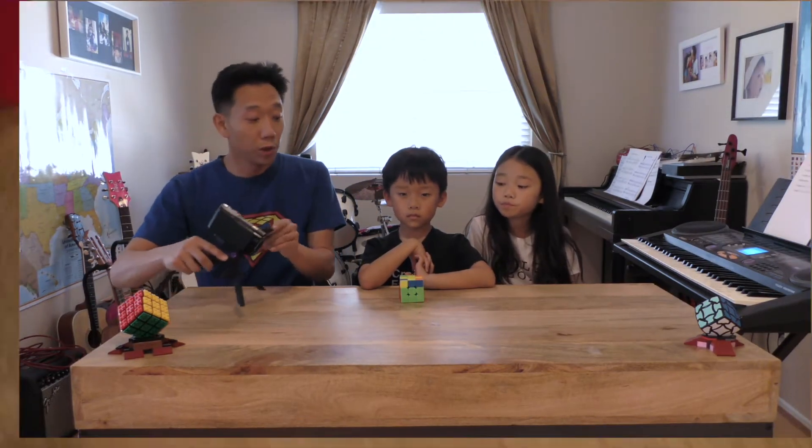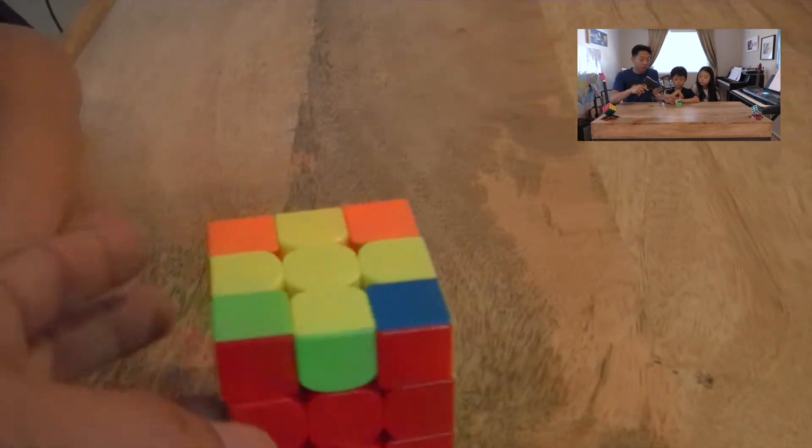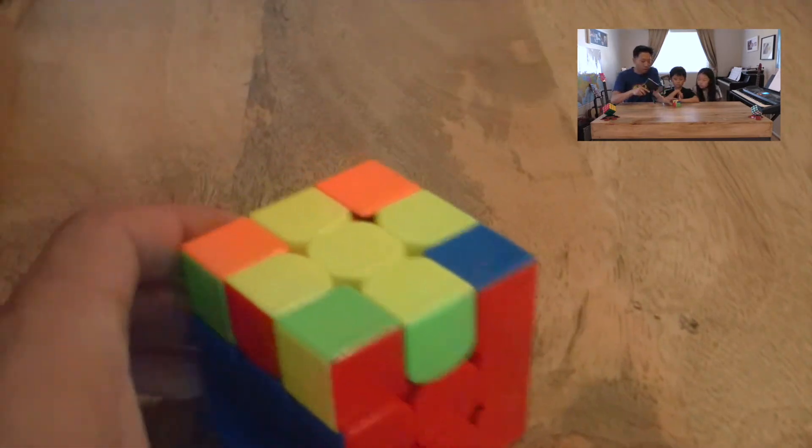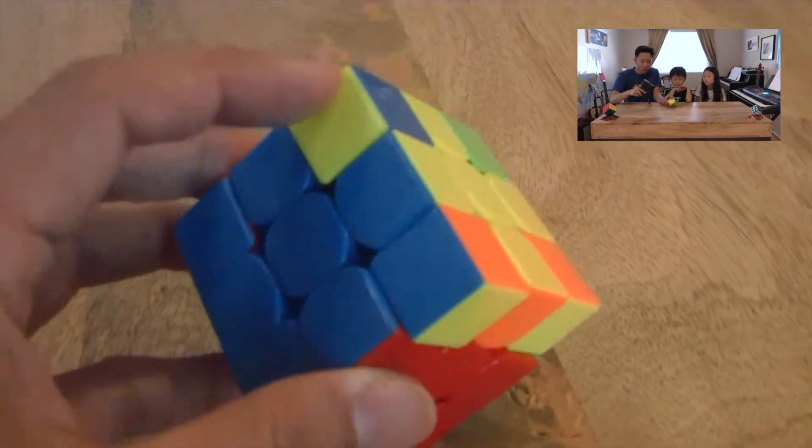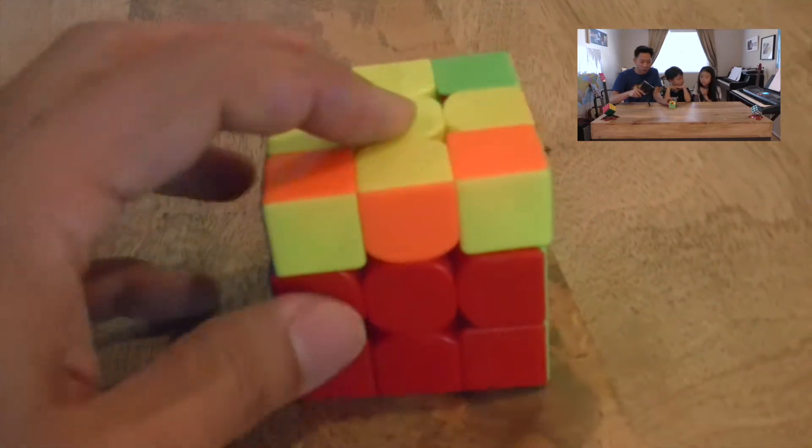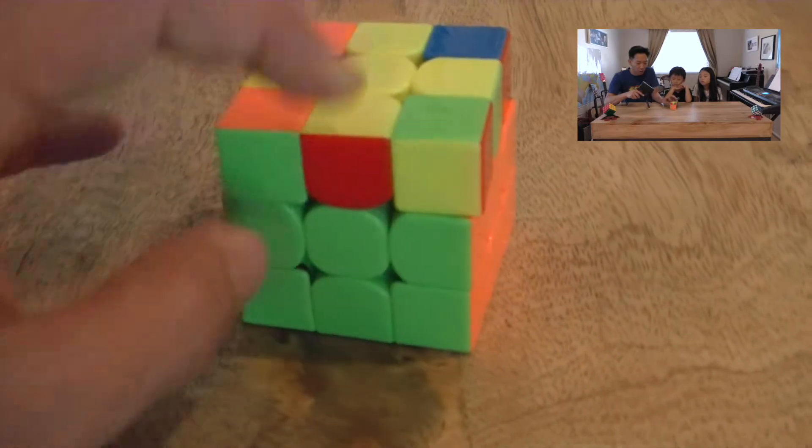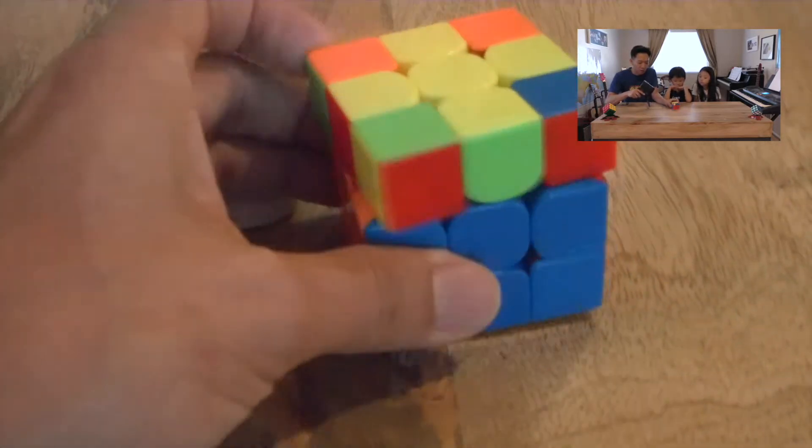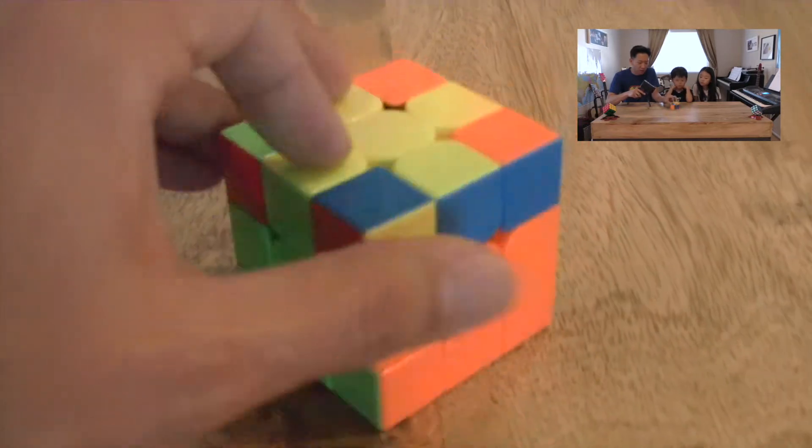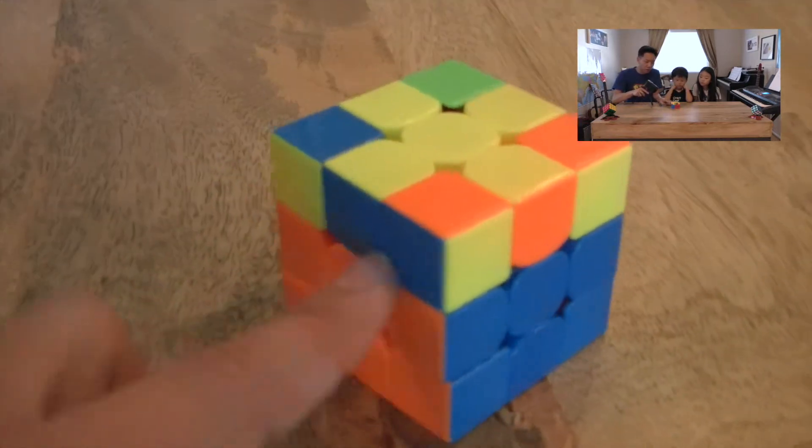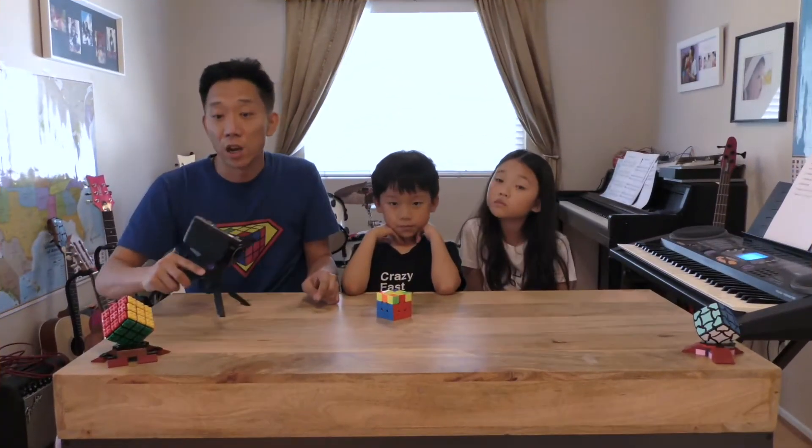As we demonstrated, your cube may right now look something like this. You will have a yellow cross, but no matter how many U moves you do, you can't make all those yellow edges match up with the side. Maybe at most two, like red and green here, but then you realize you have to switch this blue and the orange.